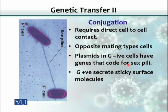Gram-negative cells have sex pilus. Gram-positive cells secrete sticky surface molecules that bring two cells together, and this phenomenon of gene transfer can happen in them as well.